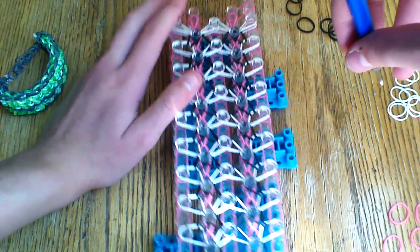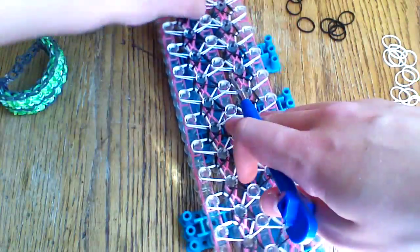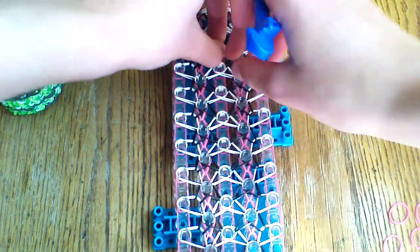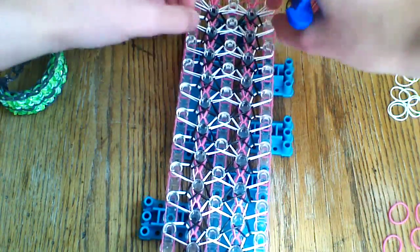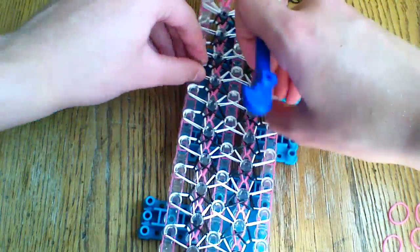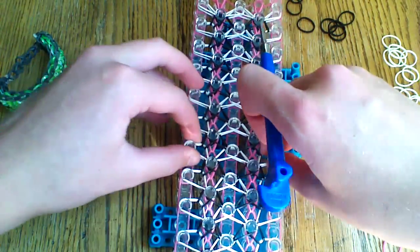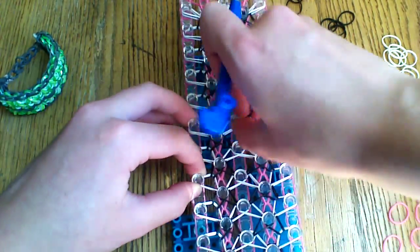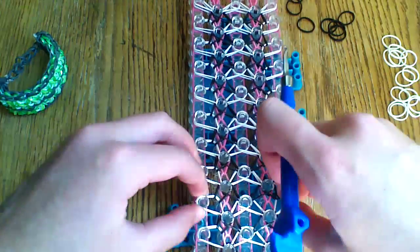So, once you reach the top of your loom, this is what it should look like. You're going to want to push down all the bands in the center and on the sides as well. Continue just pushing down all your bands, because you are going to loop some more bands.